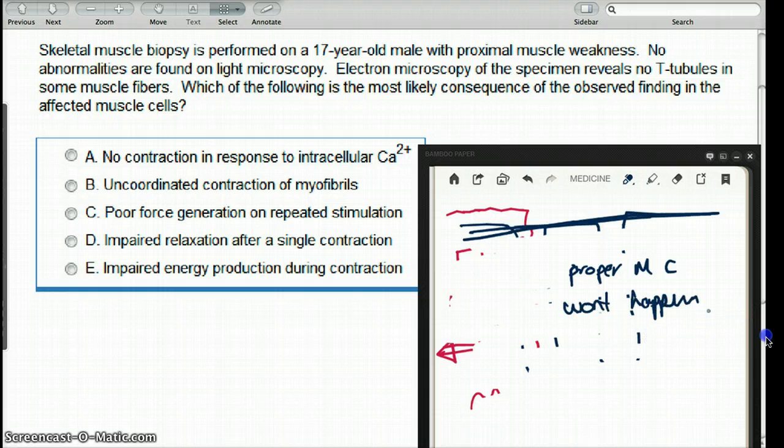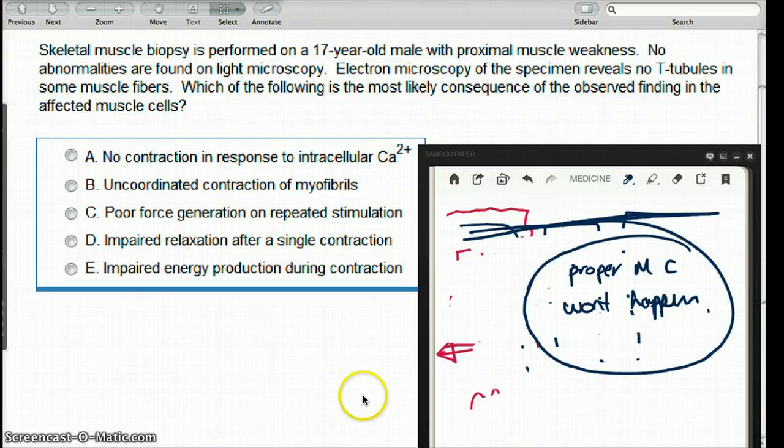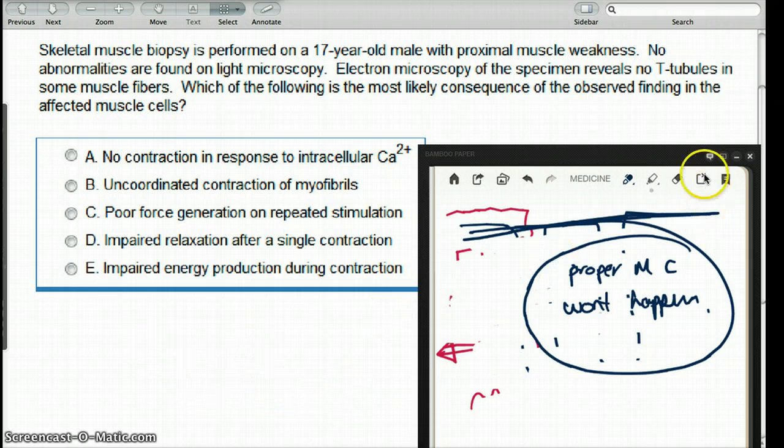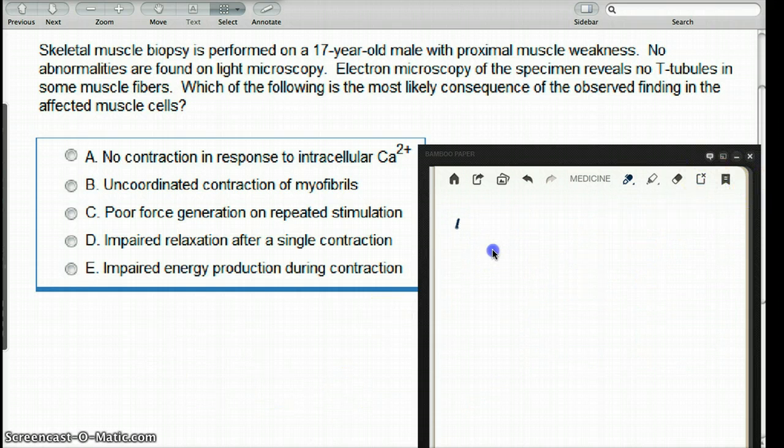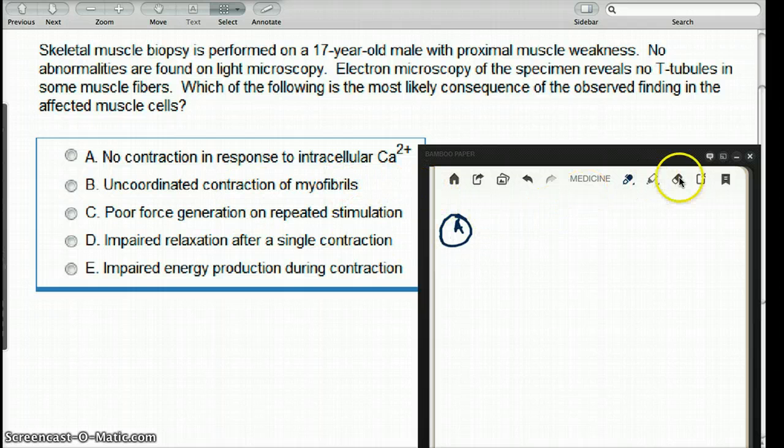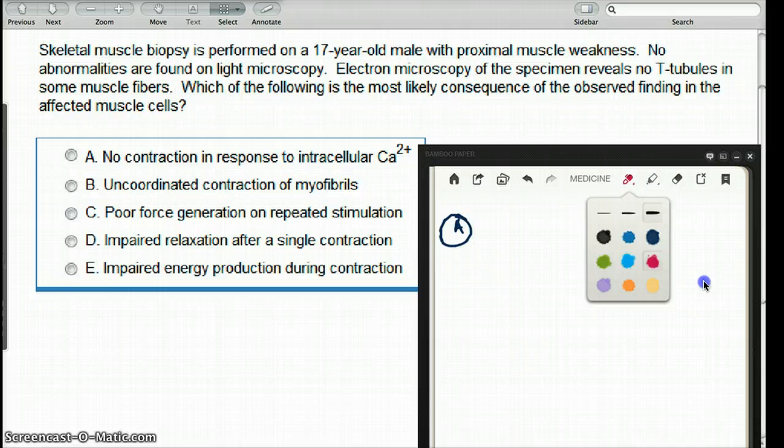If proper muscle contraction won't happen, it won't be very functional. Some calcium would still bind, but it won't be a proper muscle contraction. So let's see what are some of the options available to us. Choice A says no contraction in response to intracellular calcium. It won't be no contraction. Contraction would be less, but it won't be no contraction.